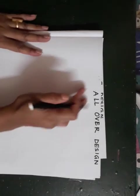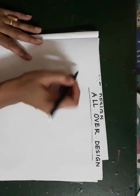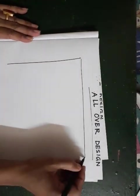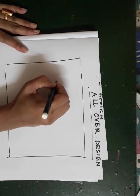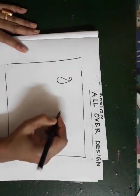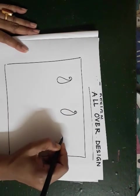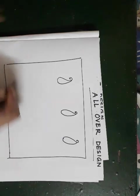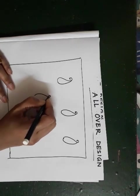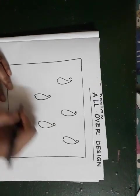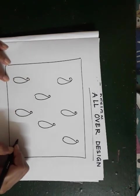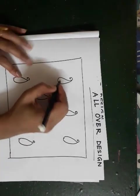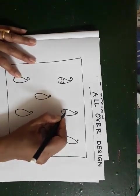Next, on the top of the page, we'll write the all-over design. Same way, draw the square shape. And draw the all-over designs. This means you use the drawings across the whole picture. This is called the all-over design.